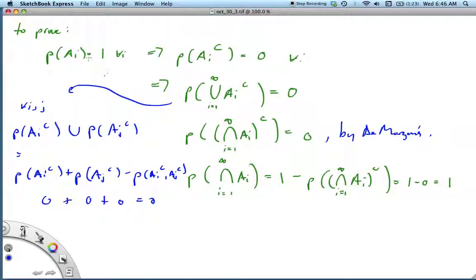To prove it, I said P(Ai) = 1 for all i, that's our given information. By the definition of complement, P(Ai^c) = 0 for all i. If we've got a bunch of things that have no probability and we form their union, that's also going to have 0 probability.